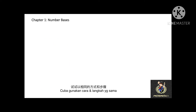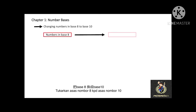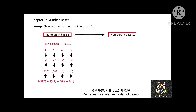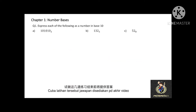And the last one: changing numbers in base 8 to base 10. You may use the same method as the previous example. The only difference is the index notation starts from 8 to the power of 0. You may pause the video and try this question — the answers are provided at the end of this video.